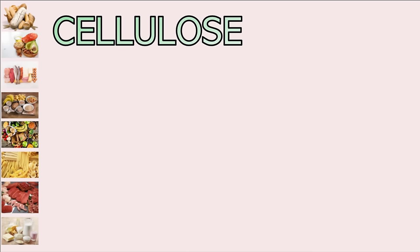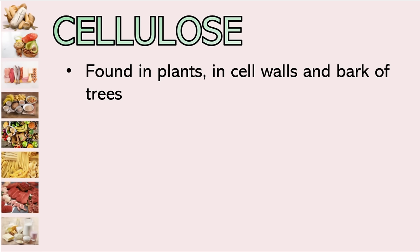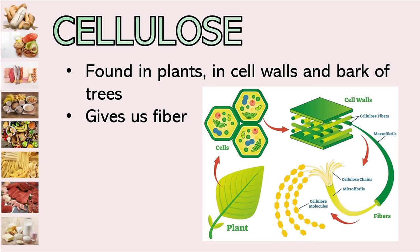The third example of polysaccharide is cellulose. Cellulose is found in plants, particularly in cell walls and the bark of trees. It gives us fiber. For example, when we eat a lot of leafy vegetables like kangkong, not all of it is digested by our body — some passes through because we don't have an enzyme to digest cellulose. The portion of vegetables that is digested gives us dietary fiber, which is very important for the good bacteria in our gut that aids digestion.